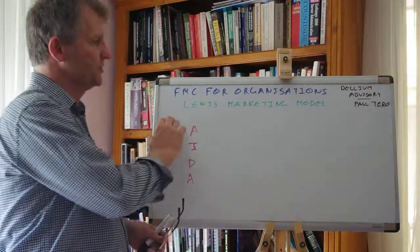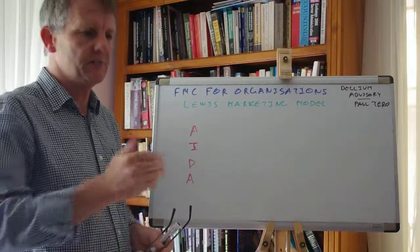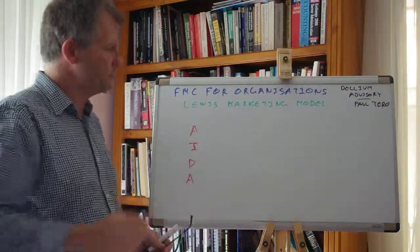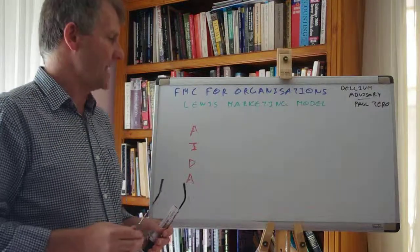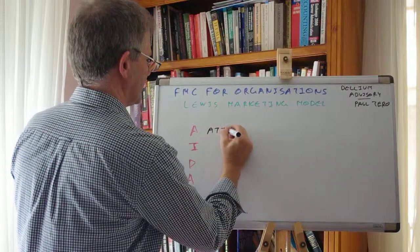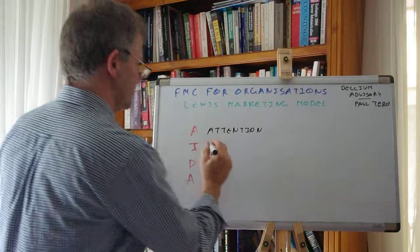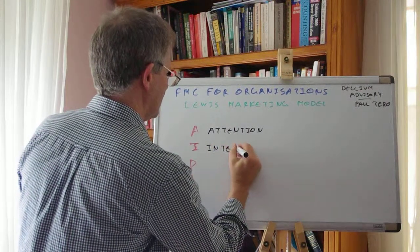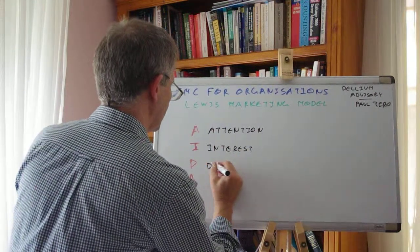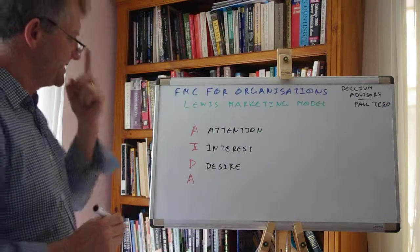For this session, I want to cover off the Lewis Marketing Model. The Lewis Marketing Model has been around for a number of years. It's been updated and new things have been added to it. But at its essence, this is what it is. The Lewis Marketing Model: A, I, D, and A. The first A stands for Attention. The I stands for Interest. D stands for Desire. And this second A, the last letter, stands for Action.